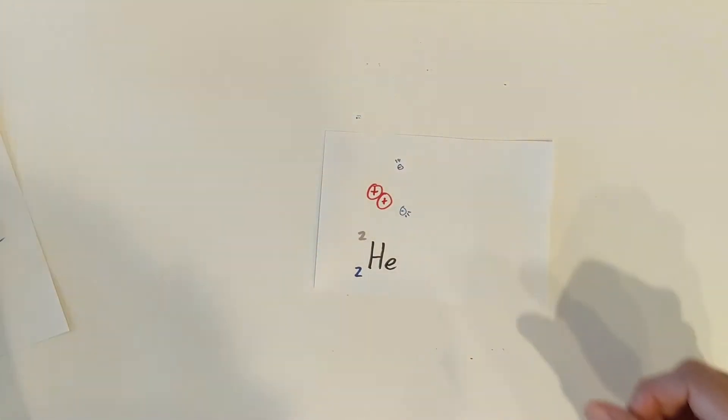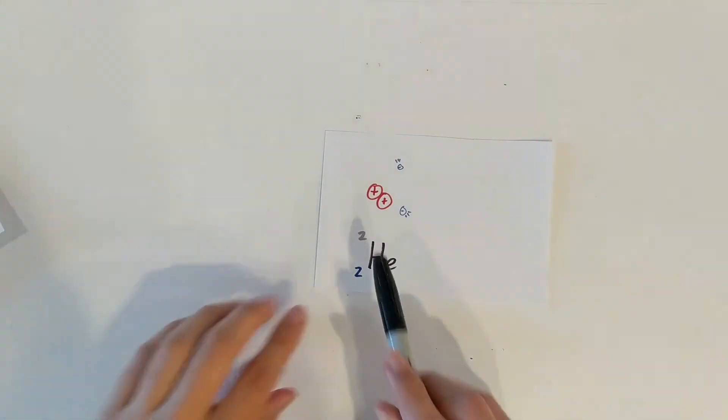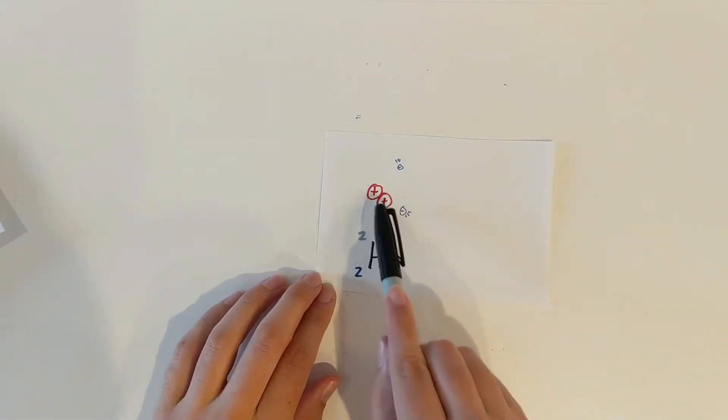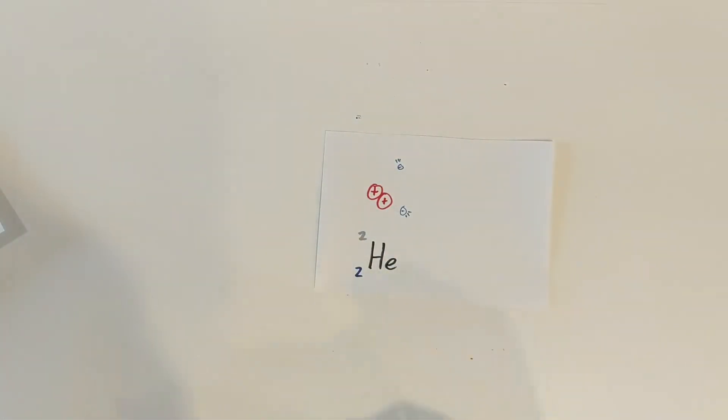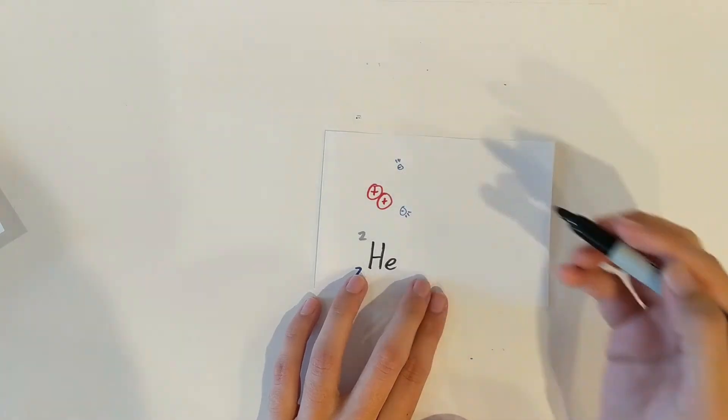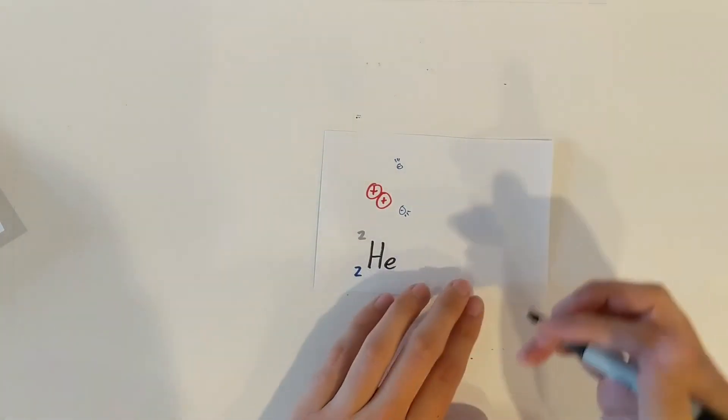All right, so this is our first example of a non-stable atom. If we take a look, we got two protons in our nucleus and two electrons outside in our electron cloud. And those two protons want to repel each other and there's no neutrons to hold them together.